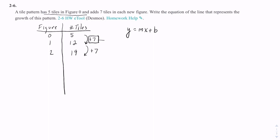So that's the m, the 7. And the b is how many tiles are in the zeroth figure. So this 5 is the b.